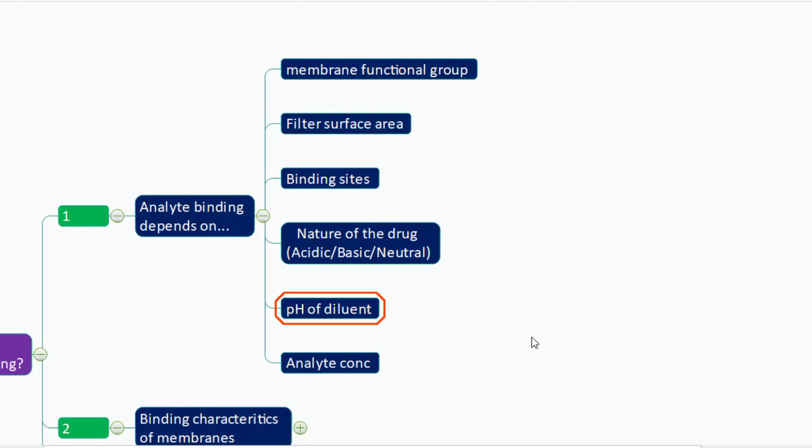Just because a nylon filter is suitable at pH 6.8 does not mean it will be suitable at pH 1.2 or in 0.1N HCl. The ionization state at pH 1.2 may differ from that at pH 6.8, and you may find different analyte binding at lower pH. You must not apply a thumb rule and assume that because you get good recoveries at pH 6.8, the same will hold true in 0.1N HCl — that should not be the approach.